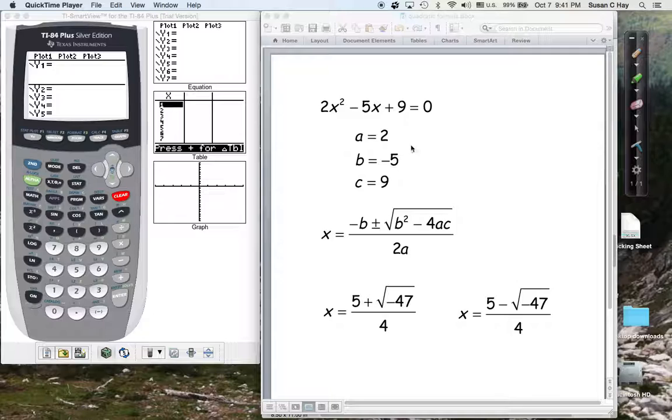So you go ahead and use the quadratic formula. You plug in the 2, the negative 5, and the 9 to this funky formula here and you end up with this: 5 plus the square root of negative 47 over 4 and 5 minus the square root of negative 47 over 4.